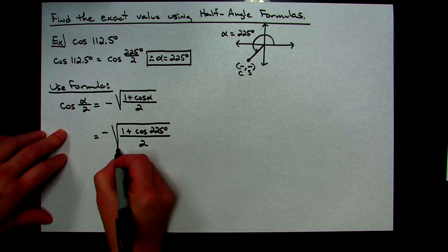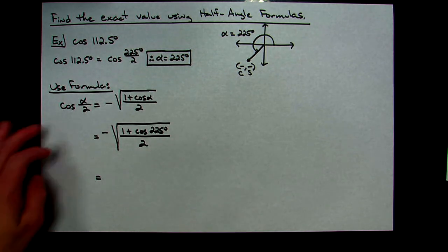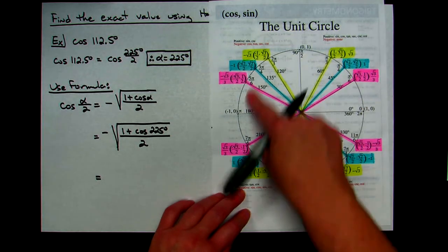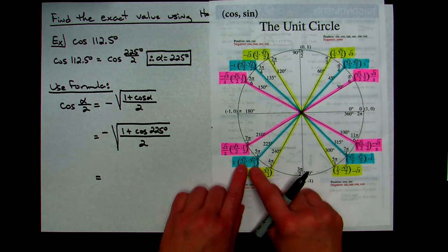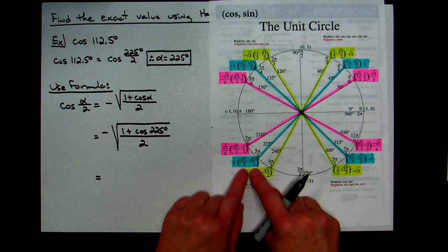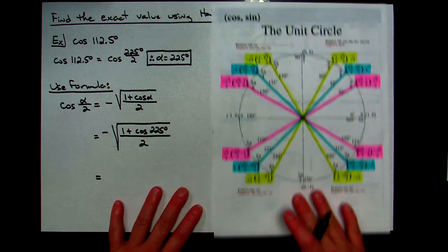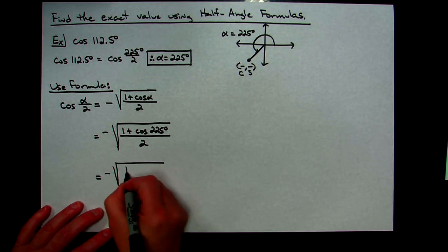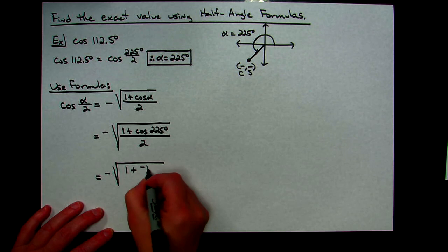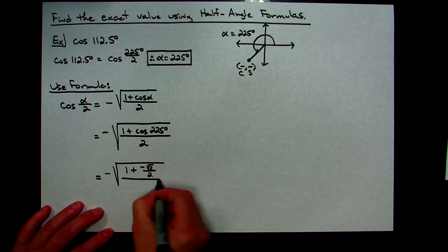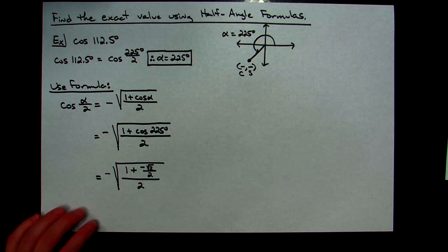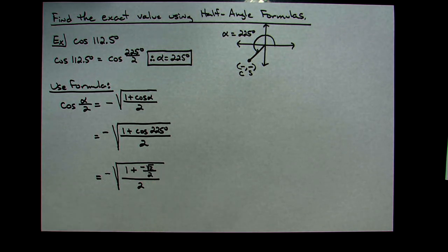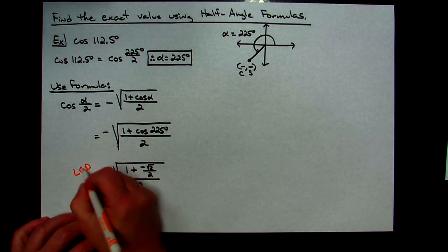I don't want to use a calculator for cosine of 225° — I'll use the unit circle. At 225°, the ordered pair on the unit circle gives cosine = negative √2/2. Replacing that value: negative square root of (1 + (−√2/2)) all over 2. This creates a complex fraction, which I need to simplify.